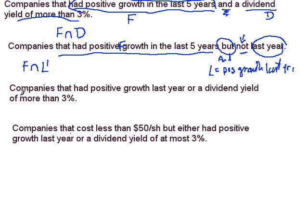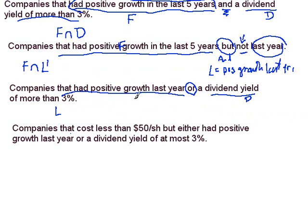Let's look at the third condition: companies that had positive growth last year — we just introduced L for that. Or a dividend yield of more than 3% — that was D. The 'or' connector means union, because you're putting things together, merging both sets. So this is just L union D.